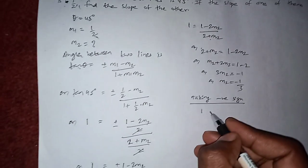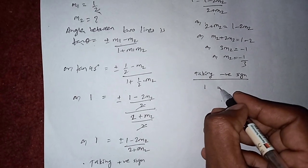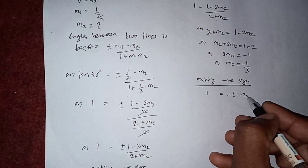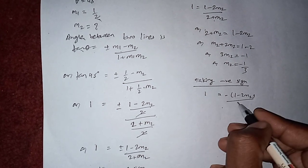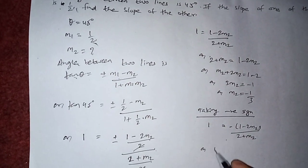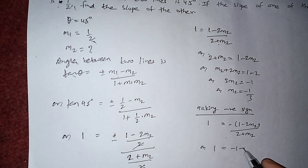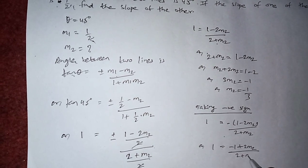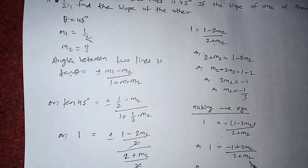Similarly, taking negative sign. If we take negative sign, then it will be 1 equals to minus (1 minus 2m2) by (2 plus m2), or 1 equals to (minus 1 plus 2m2) by (2 plus m2).